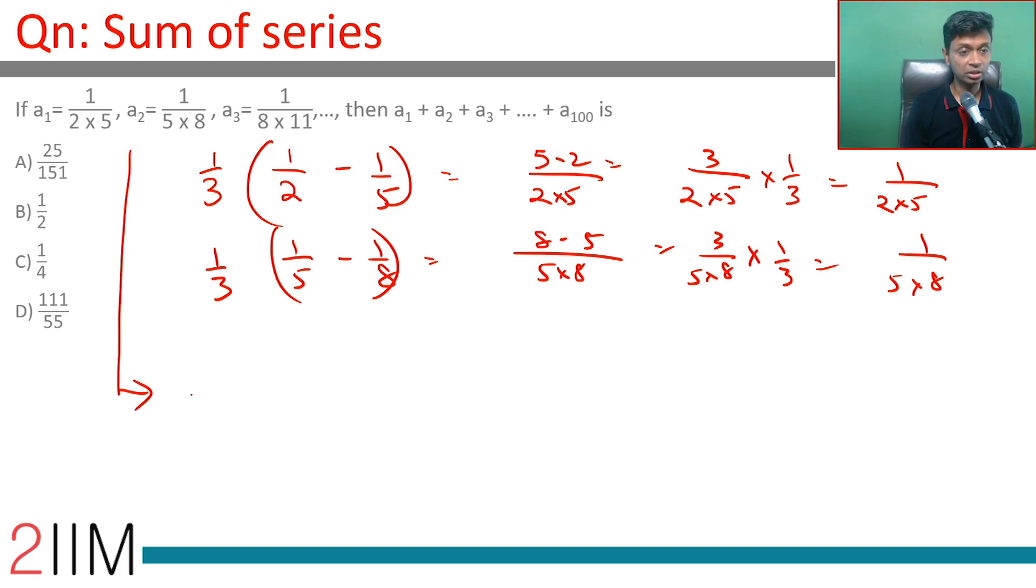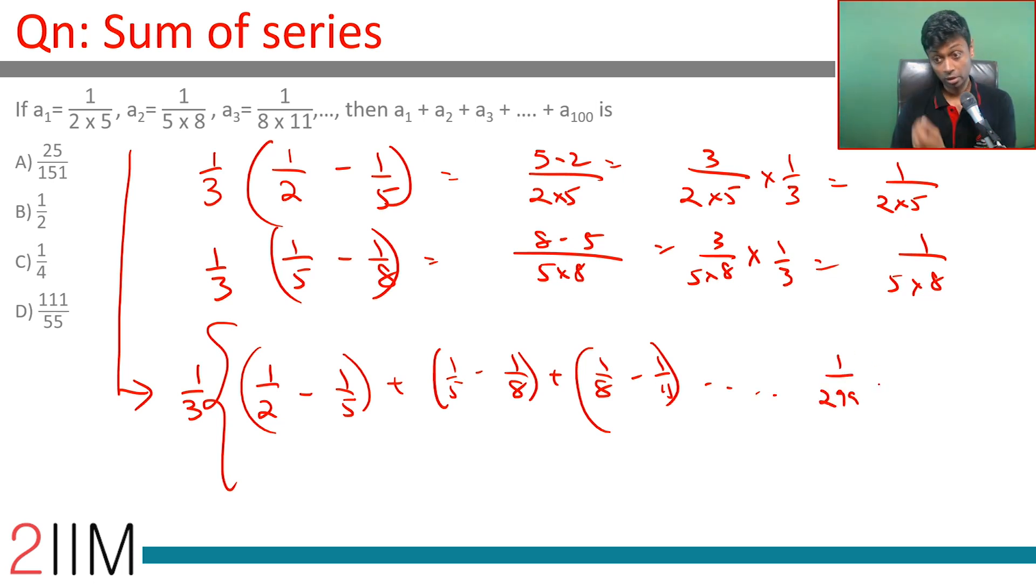Or this giant expression can be written as 1 third whole of 1 by 2 minus 1 by 5 plus 1 by 5 minus 1 by 8 plus 1 by 8 minus 1 by 11, all the way to 1 by 299 minus 1 by 302. Just like how we had outlined, A minus B plus B minus C plus C minus D all the way to one final term.